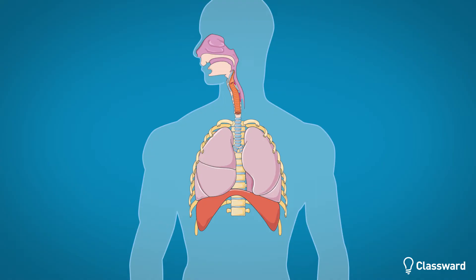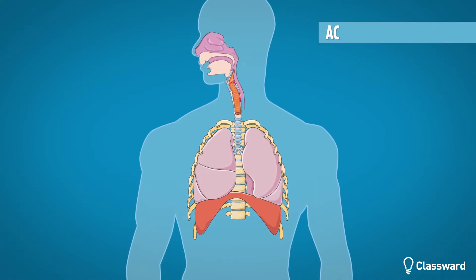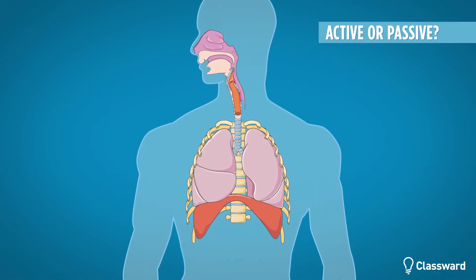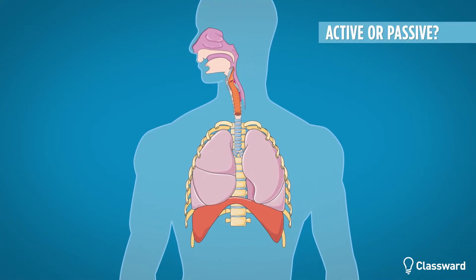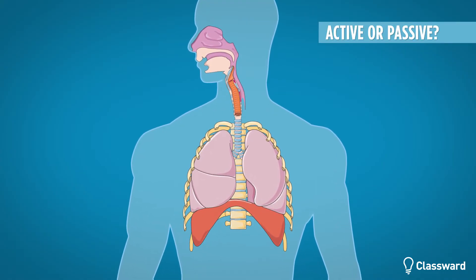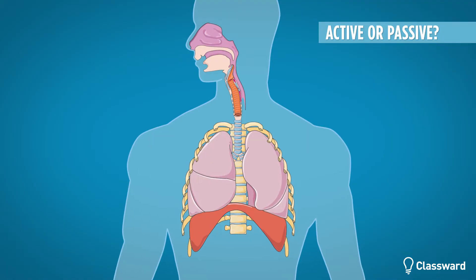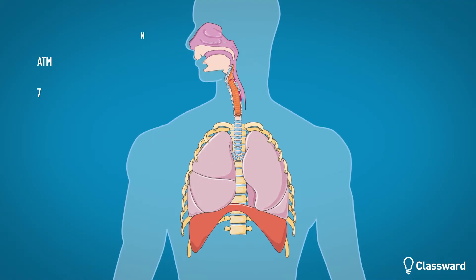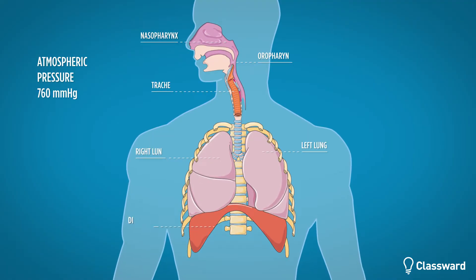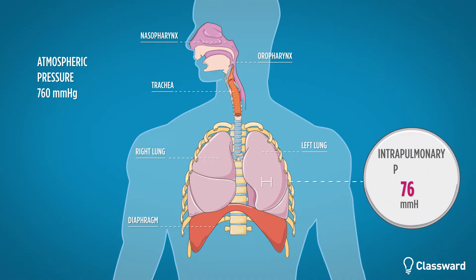What is the mechanism that allows breathing, and is it an active or passive process? First, we have to understand pressure. Outside the body, the air is 760 mmHg. At rest, the intrapulmonary pressure is also 760 mmHg.